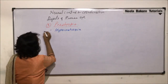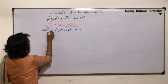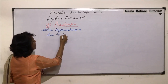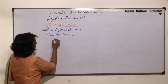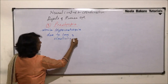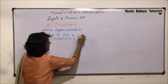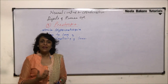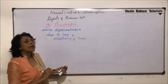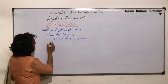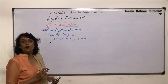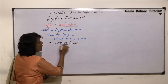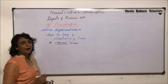Presbyopia is similar to hypermetropia, due to loss of elasticity of the lens. The lens is no longer elastic enough, so its focal length cannot be adjusted. Correction is done using a converging lens, that is, a convex lens.